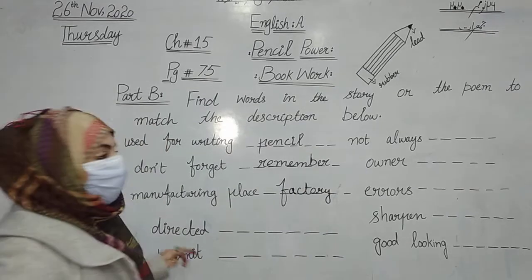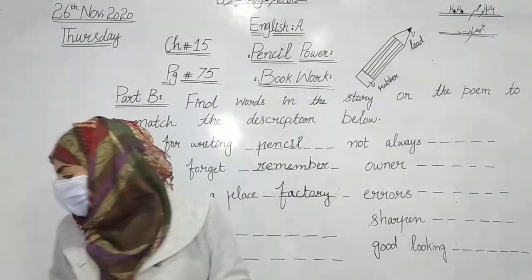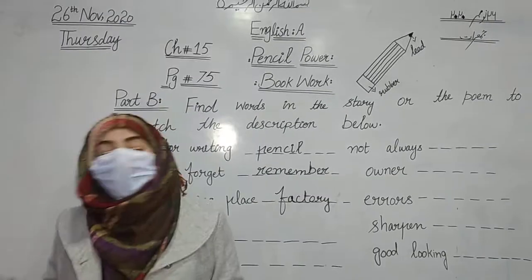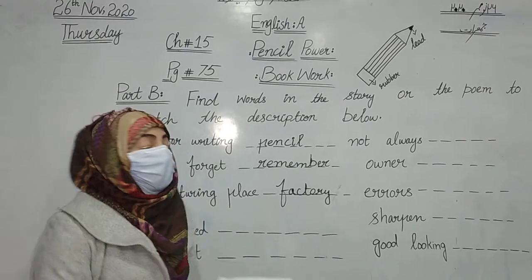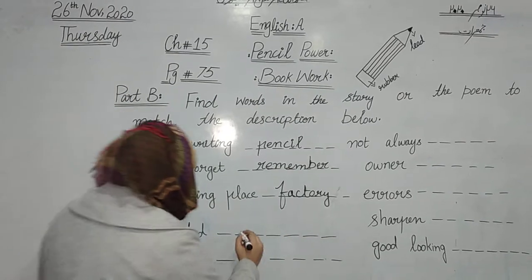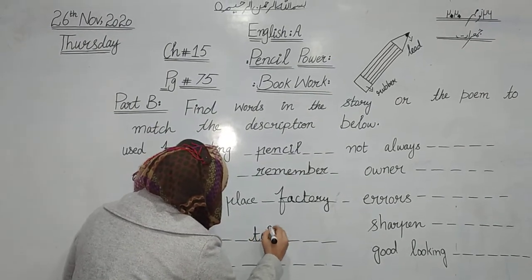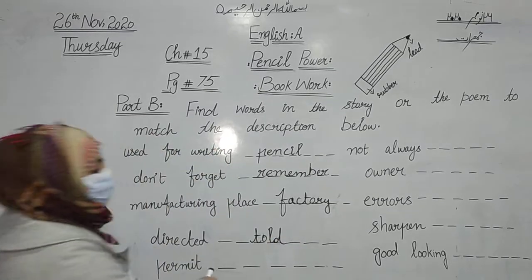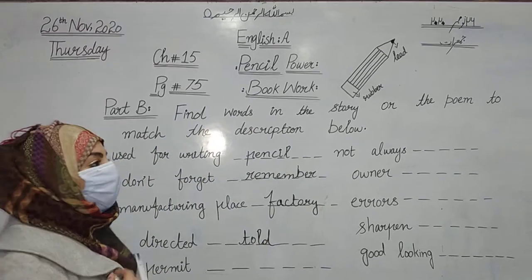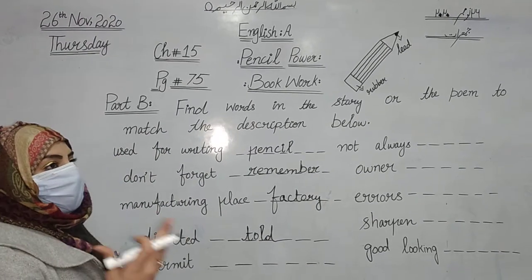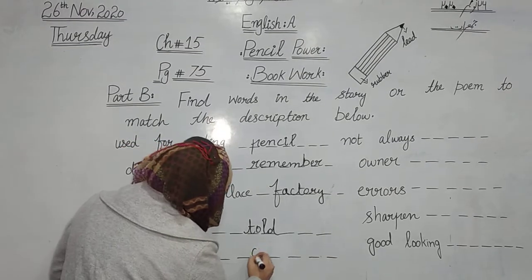Next, 'directed'. Directed means hem kisi ko direct karte hain — we tell someone about something. So the meaning of directed is 'told'. Next, 'permit' — permit means to allow someone; kisi ko kisi cheez ke liye allow karna, ijazat dena.